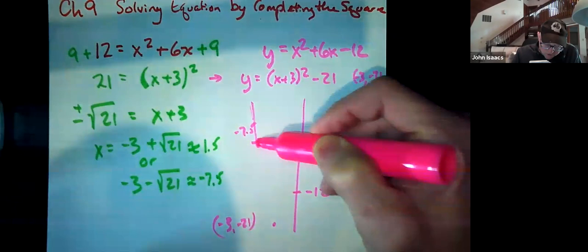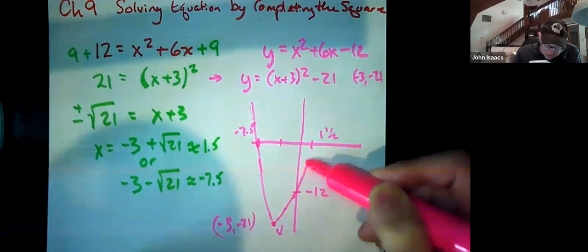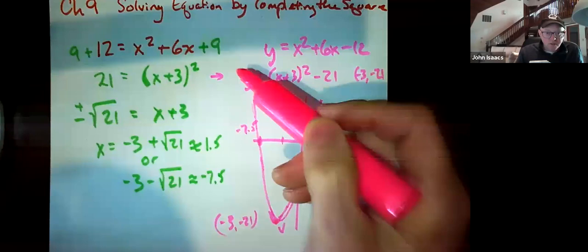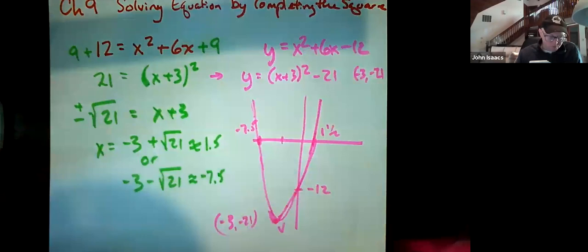So we can now graph this because we have our zeros, our vertex, our y intercept. It's supposed to look a little more rounded. And we can graph our equation, but solving the equation is this completing the square thing: the plus nine, plus nine, 21 take square root of both sides and solve. Okay, so here we go.